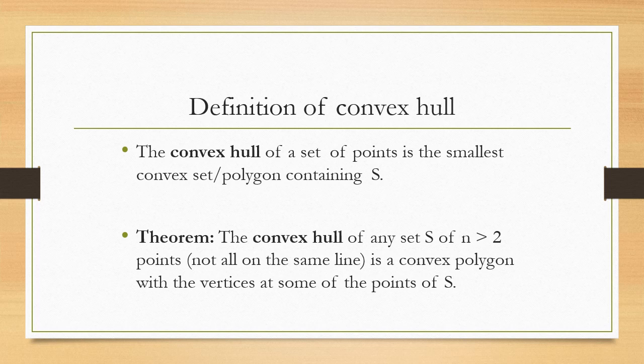Here comes the definition of the convex hull. The convex hull of a set of points is the smallest convex set or polygon containing S. Theorem: the convex hull of any set S of n greater than two points, not all on the same line, is a convex polygon with vertices at some of the points of S.